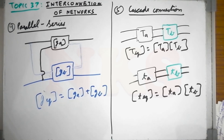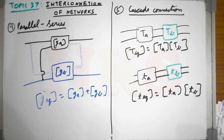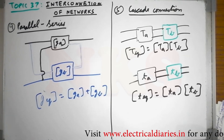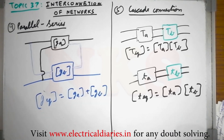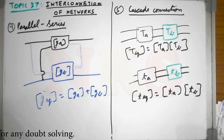To summarize this topic: given a network, you must identify the type of interconnection. For parallel-series use G parameters, for series-series use impedance parameters, for series-parallel use H parameters, for parallel-parallel use Y parameters, and for cascade use ABCD transmission parameters with multiplication. In the next video, many problems will be solved for further clarification. Thank you — please like, share, and subscribe. Visit devdoom.electricaldiaries.in for further doubt solving.